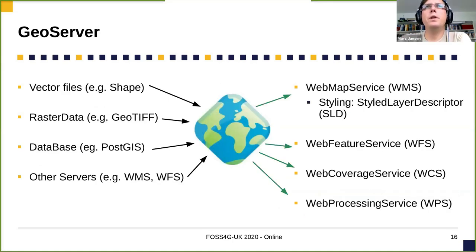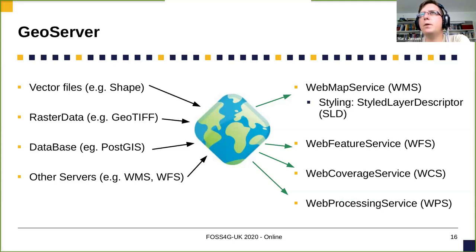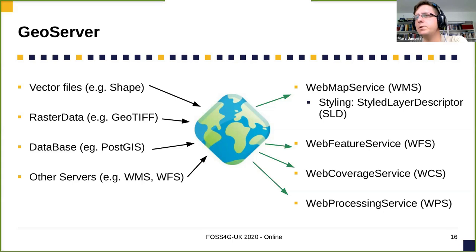So what does GeoServer do in a nutshell? It takes your data — on the left side: vector, raster, databases, or even other WMS or WFS servers — and puts out that data in different formats like WMS, WFS, Web Coverage Service and so on. It's really a Swiss army knife when it comes to serving data on the web.